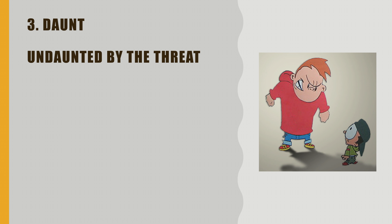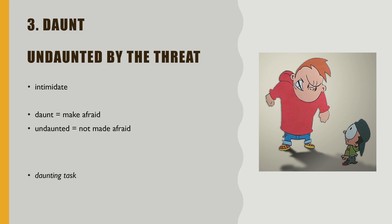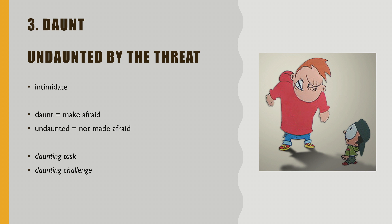Daunt — undaunted by the threat. To daunt is to intimidate someone, so a bully daunts the other child. If you are undaunted, you are not made afraid by the bully. We could also talk about a daunting task, which is a job that is very intimidating — too big to handle, so you feel afraid or nervous at the beginning. Or a daunting challenge — one that seems very difficult to undertake.